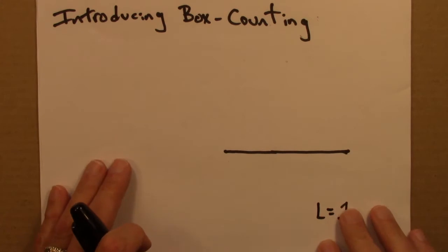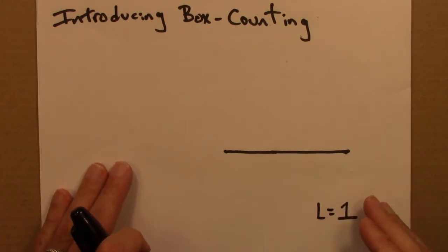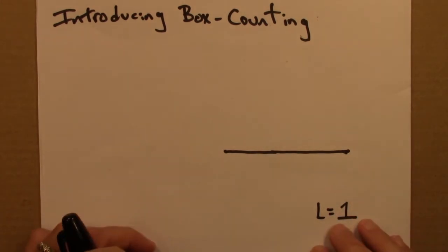The idea behind box counting is to count the number of boxes, or squares, or shapes needed to cover a certain object. And then we look at how that number of boxes changes as the size of the box changes. Easiest to just dive into some examples.